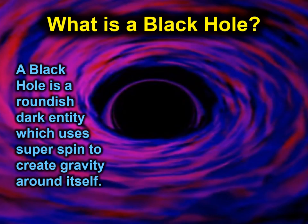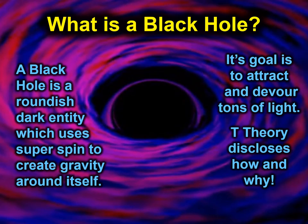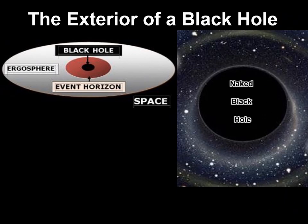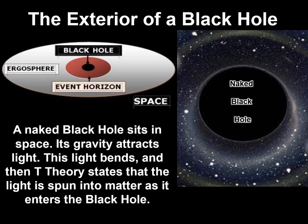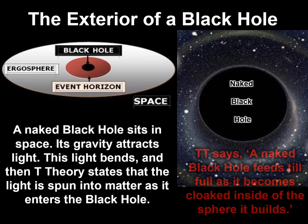Trillion Theory states black holes are cosmic builders of spheres, solar systems, and galaxies. The reason a black hole devours light is to build a new cosmic sphere around itself. A black hole is a roundish dark entity which uses super spin to create gravity around itself.